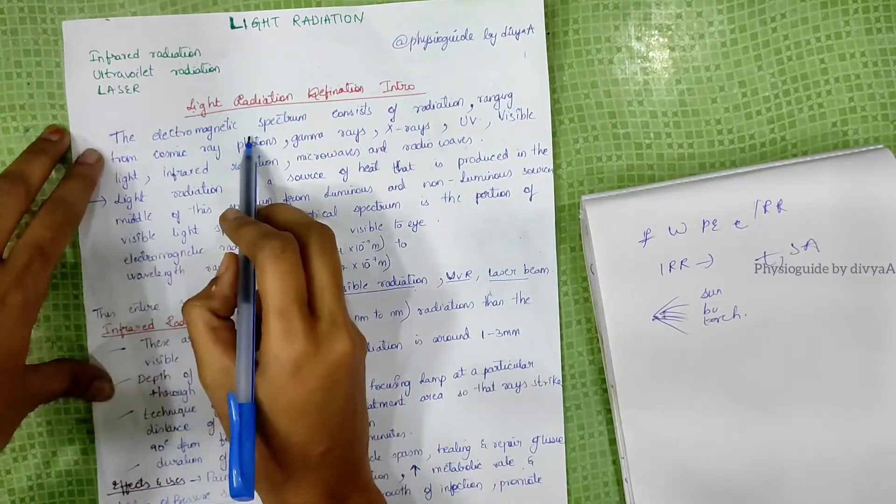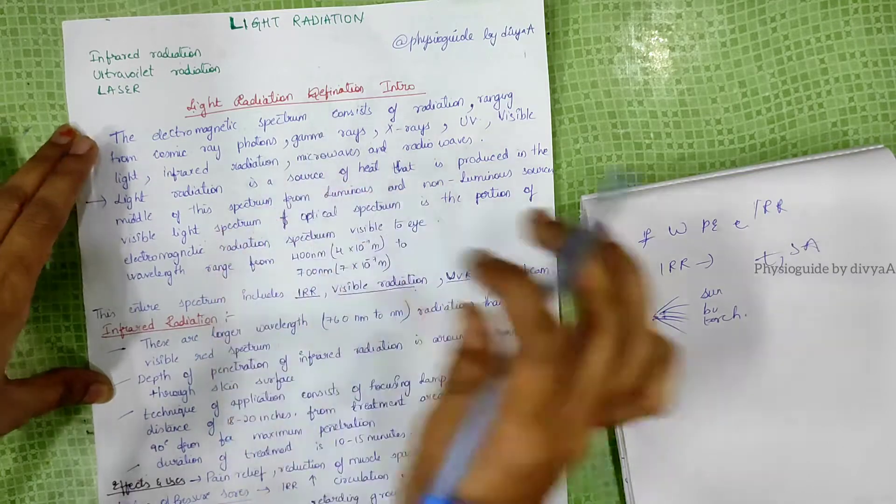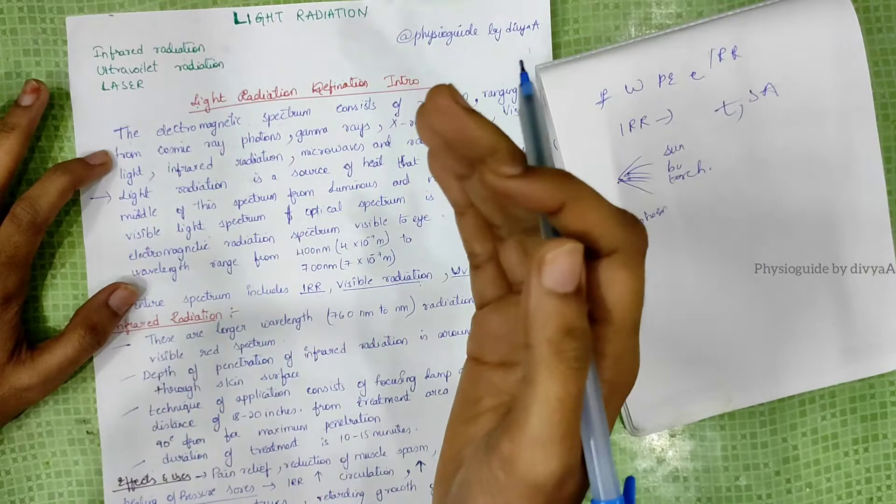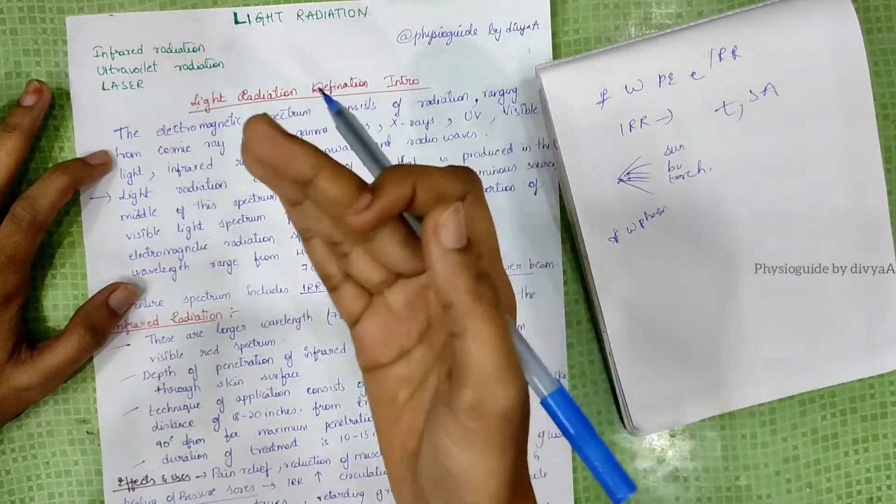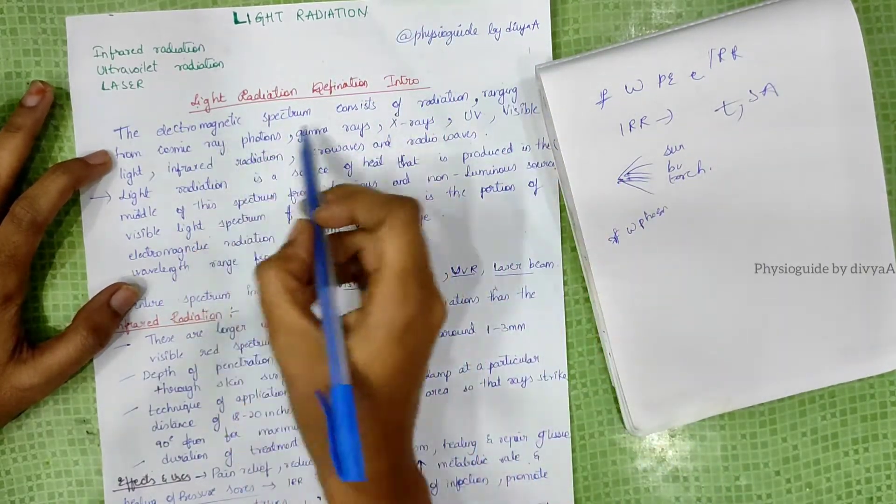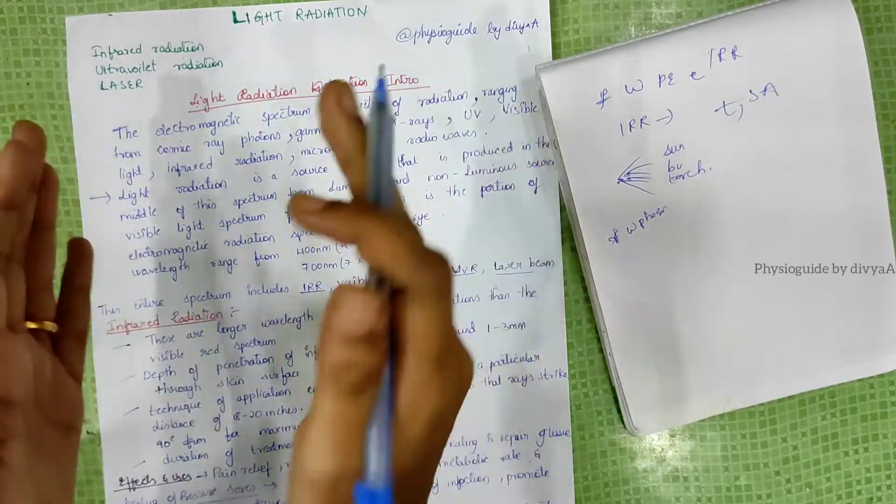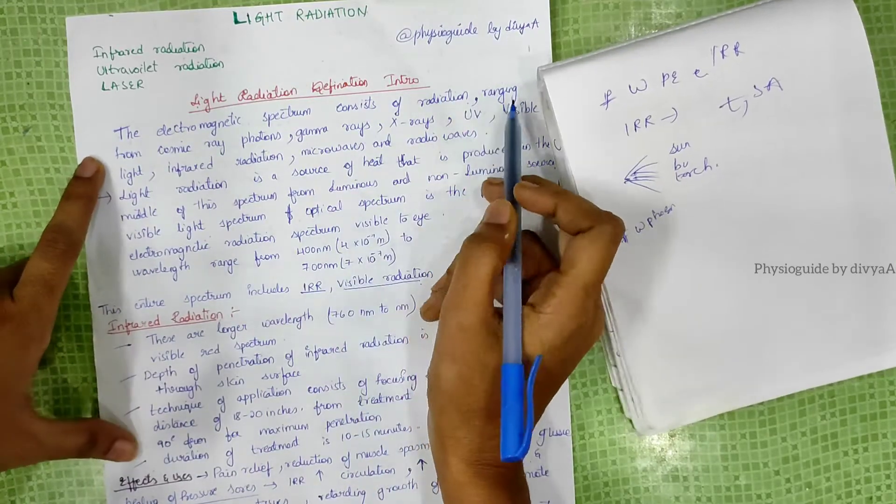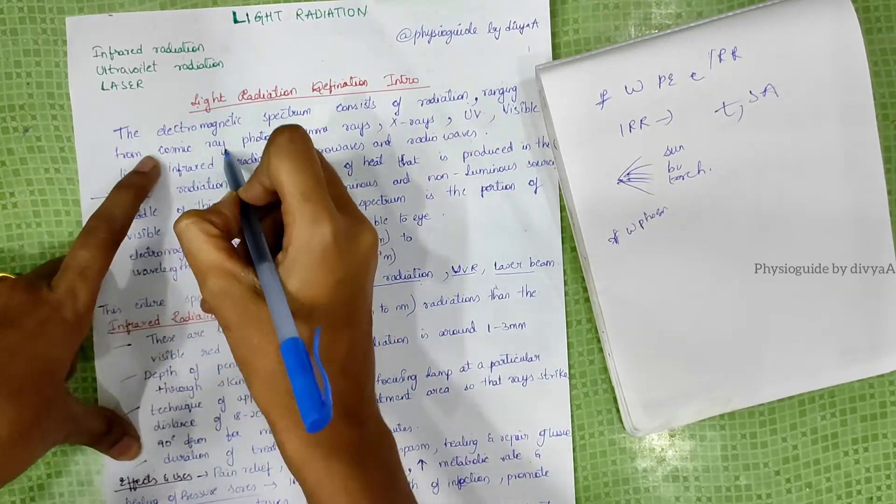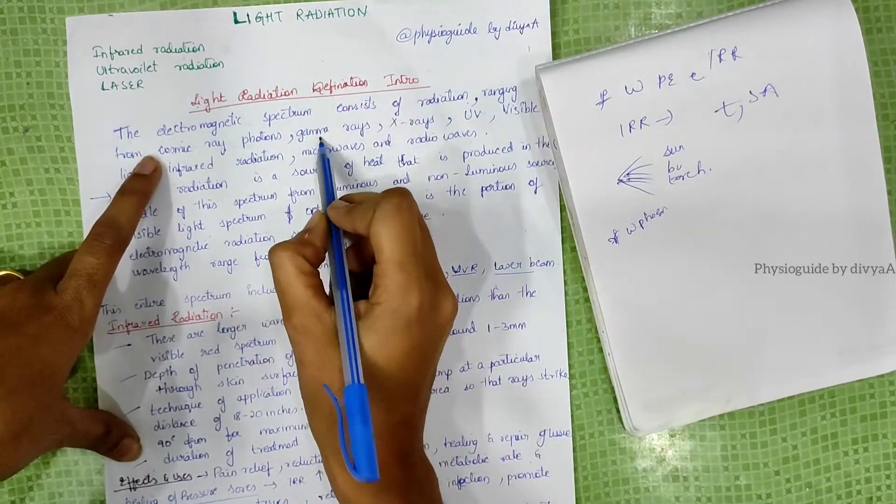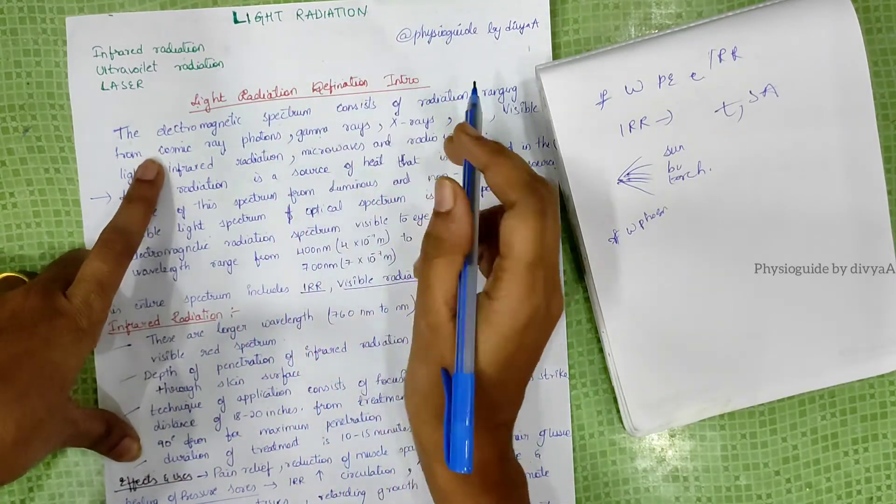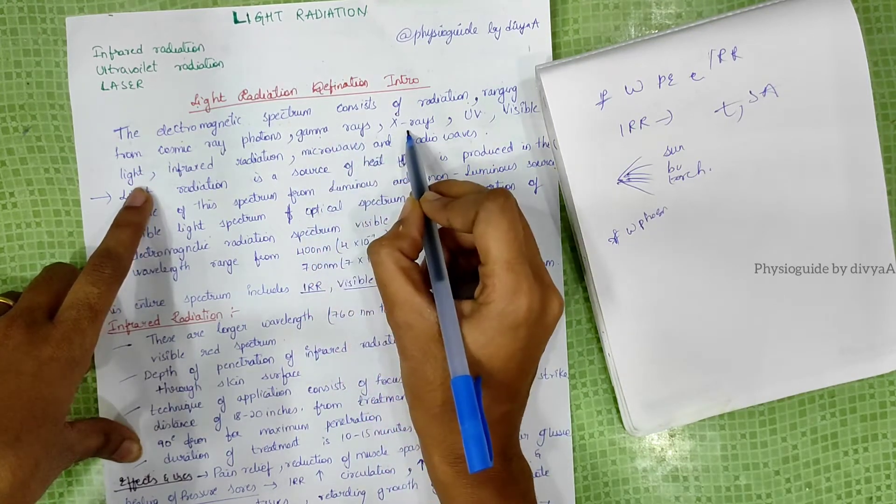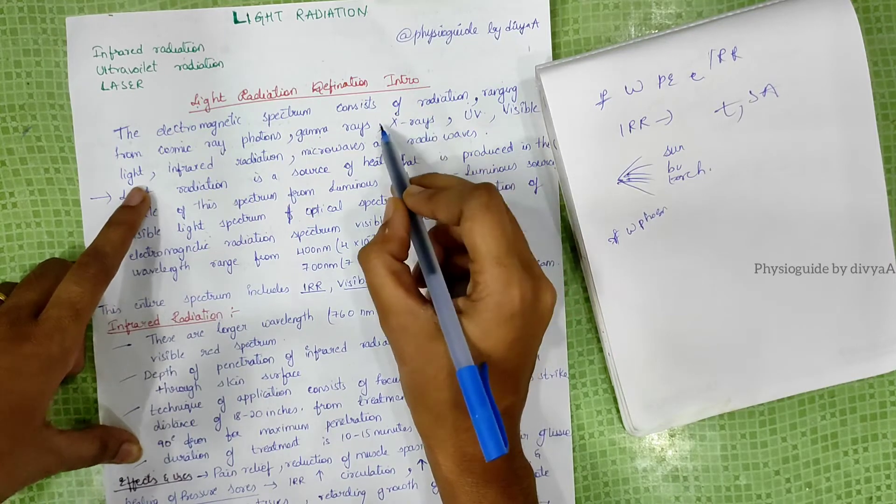The electromagnetic spectrum is a type of radiation where the frequencies, wavelength, and photon energy of electromagnetic radiation are seen. The radiation may vary and consists of radiation ranging from cosmic rays, which are high-energy particles, to gamma rays, which have the shortest wavelength, to x-rays, which are used to take pictures in the human body.